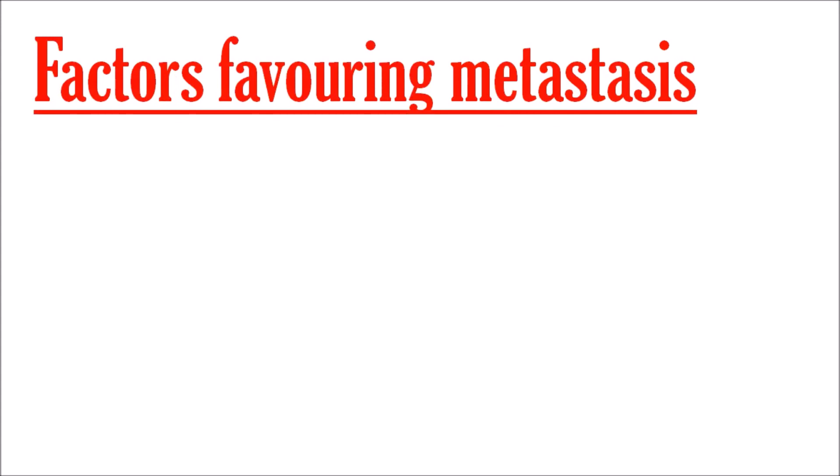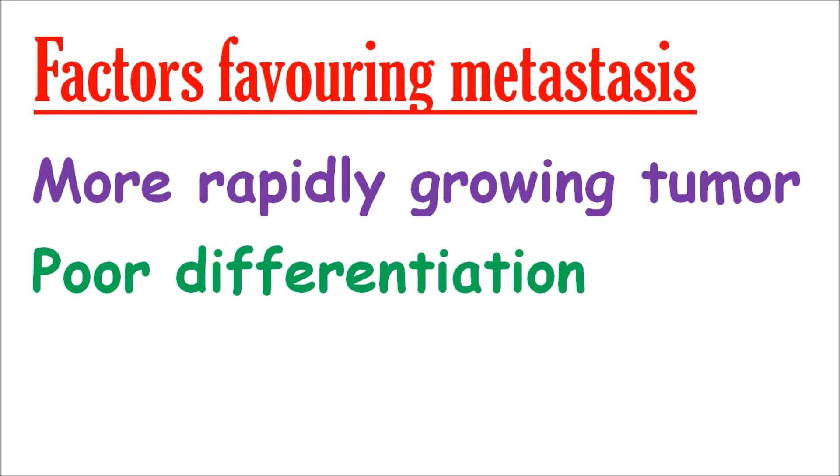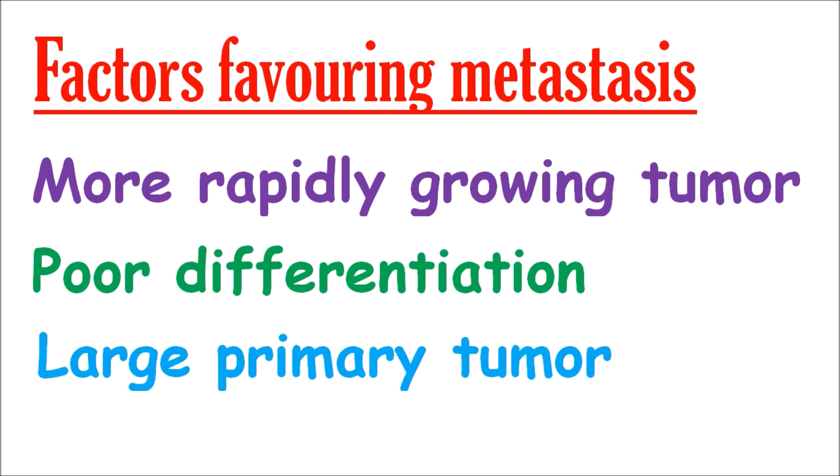Factors which favor metastasis: number one, more rapidly growing tumors are favored for metastasis. This means that the more rapidly a tumor grows, the more tumor cells it can provide, and the more tumor cells, the greater the chances of metastasis. Poor differentiation is also a reason for metastasis — the more poorly differentiated a tumor cell is, the more chances it will metastasize. Also, if the tumor is large, there are more chances of metastasis.